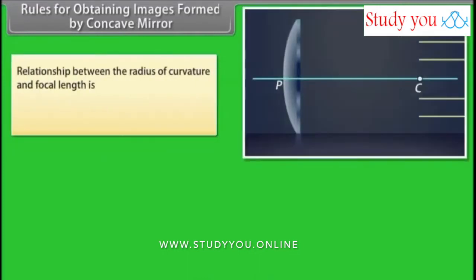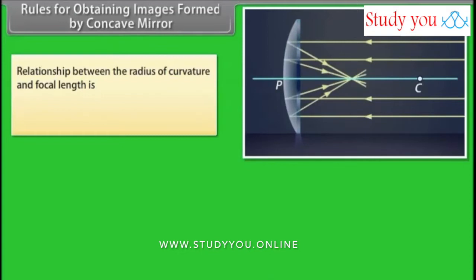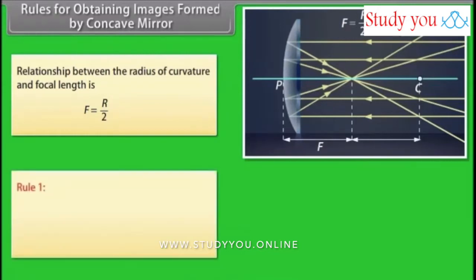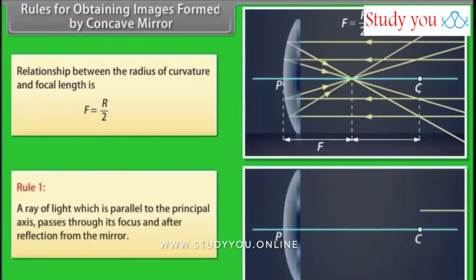Rules for obtaining images formed by concave mirrors: The relationship between the radius of curvature and focal length is F = R/2. Rule 1: A ray of light parallel to the principal axis passes through its focus after reflection from the mirror.